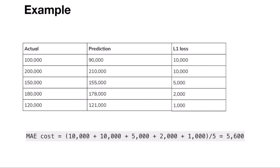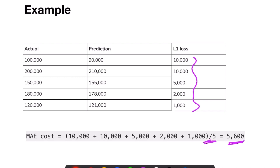Whatever the absolute differences I have, I take the average by dividing by five, which gives me one single value for the total dataset. This is my cost function, while those are the individual loss values — only one cost value for the whole dataset.